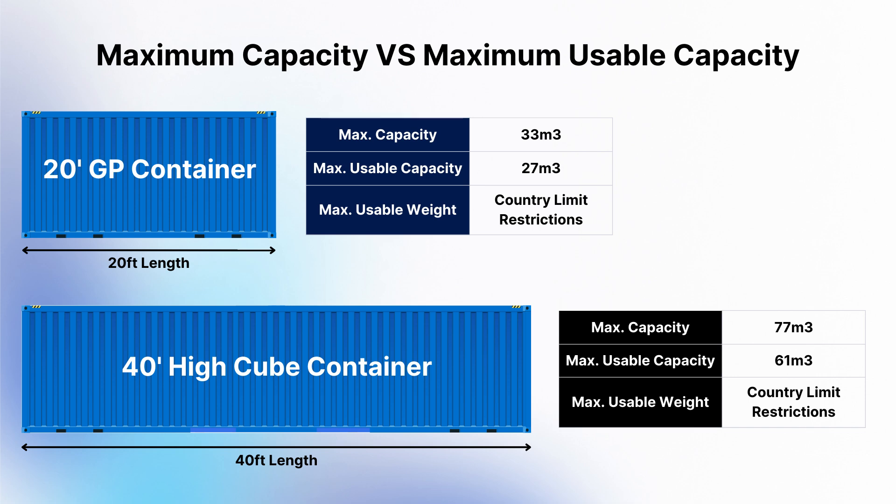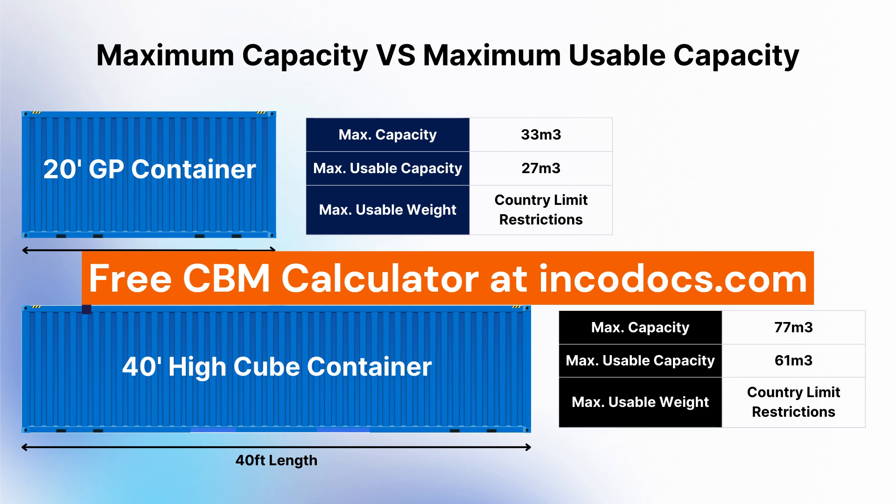When planning the loading of shipping containers, as a general rule, the maximum usable capacity of a container is around 80% of the maximum capacity. For example, a 20-foot general purpose shipping container can hold a maximum capacity of around 33 cubic metres, but the maximum usable capacity is only around 27 cubic metres. A 40-foot high cube container, which is around 40 centimetres taller than a general purpose container, can hold up to 77 cubic metres, but the usable capacity is only around 61 cubic metres. You can use the free cubic metre calculator at incodocs.com.